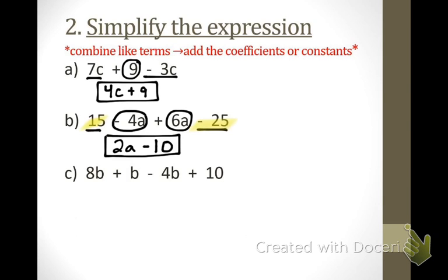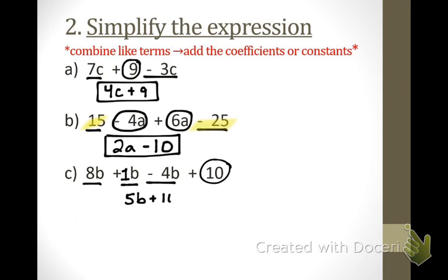What is similar to 8b? Negative 4b. Is there anything else in the b family? Plain old b — if we put a coefficient with that b, it would be 1. So 1b. The only other thing is the constant 10, standing alone. Let's combine: 8b plus 1b minus 4b. That gives us 9b minus 4b, which is 5b. Then bring down plus 10. So the answer is 5b plus 10.